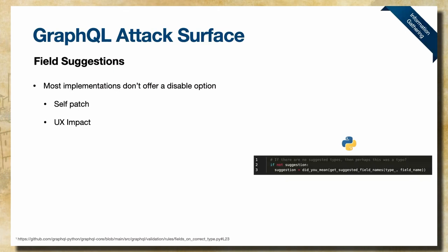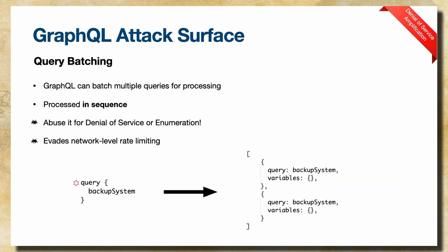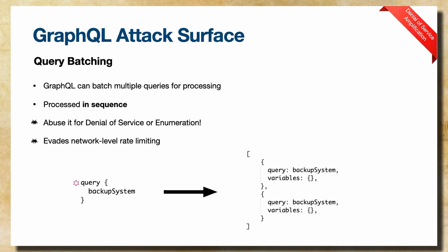Denial of service is a very common attack vector in GraphQL. GraphQL can support batching — taking multiple queries, even the same query multiple times, bundled in an array that the server processes sequentially. Batching is typically not available by default; you install a package or code it yourself. If it's available, it's a very interesting method to bring down a service. Since GraphQL lives under a single route, sending many expensive requests makes it difficult to implement solid rate-limiting rules using network or application controls like web application firewalls.